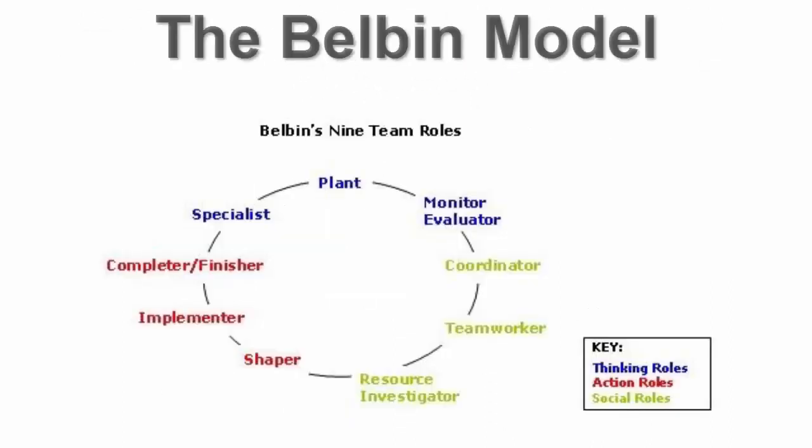The Belbin model can be used to ensure a team has the right balance of strengths and weaknesses. It says that people assume one of nine team roles: Shapers challenge the team to improve; Implementers get things done; Completer Finishers ensure projects are completed; Coordinators fill the traditional team leader role; Team Workers maintain harmony; Resource Investigators work with external stakeholders; Plants come up with new ideas and approaches; Monitor Evaluators analyze and evaluate ideas; and Specialists provide required specialist knowledge.